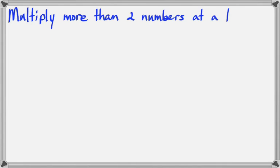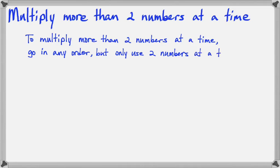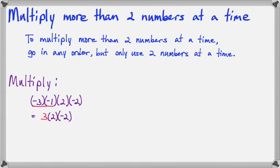Now let's talk about how to multiply together more than two numbers at a time. We can go in any order, but we only work with two numbers at once. Let's multiply negative three times negative one times two times negative two, going left to right. Negative three times negative one is positive three, positive three times two is six, and six times negative two makes negative 12.